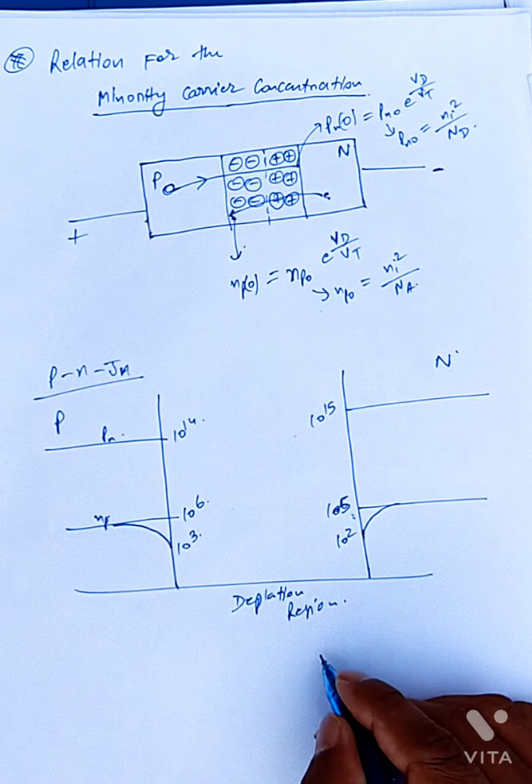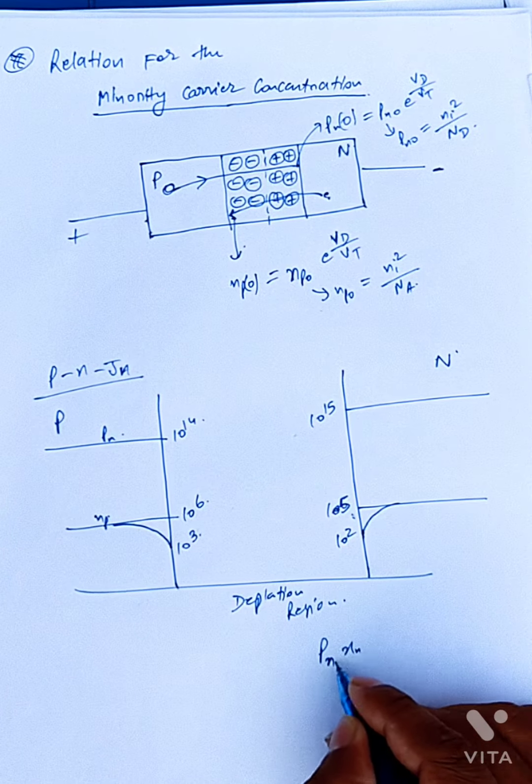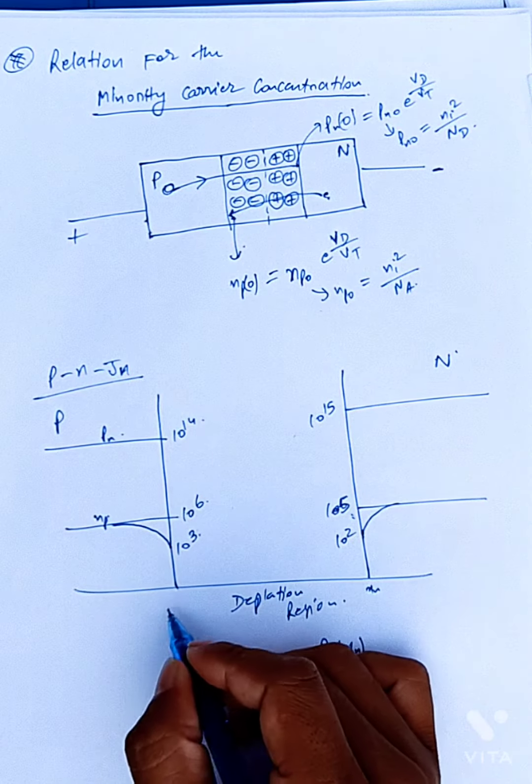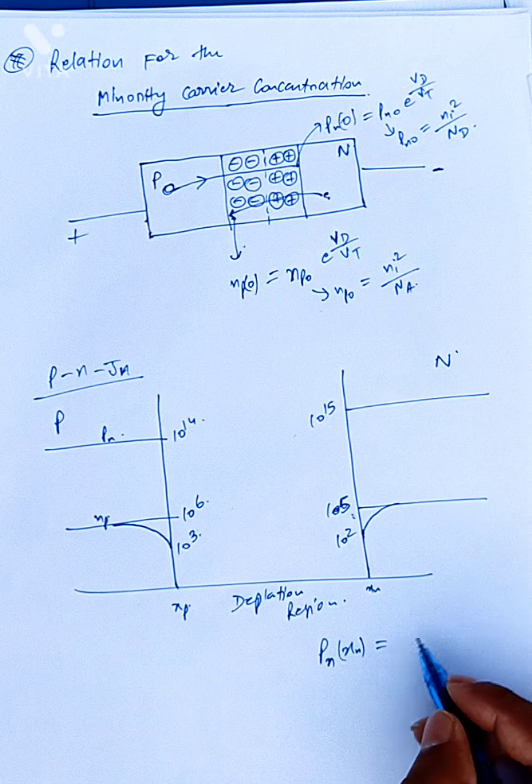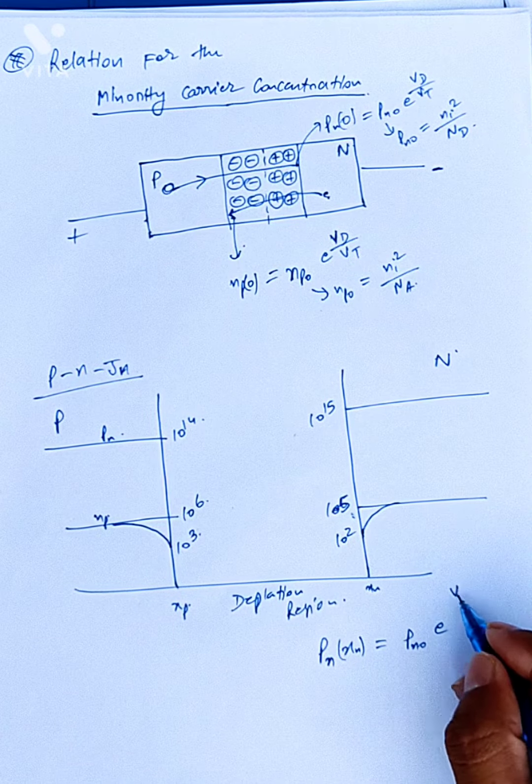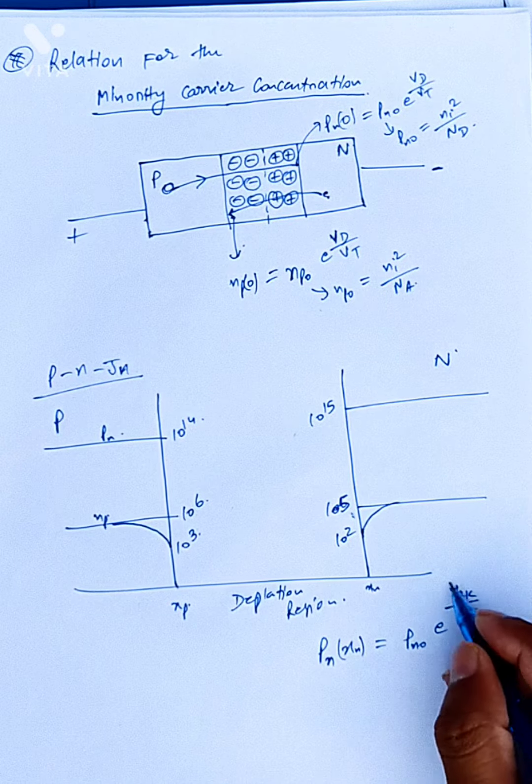What happens? P_Nxn is Xn and Exp. P_Nxn value is P_N0 e power V_A upon kT.